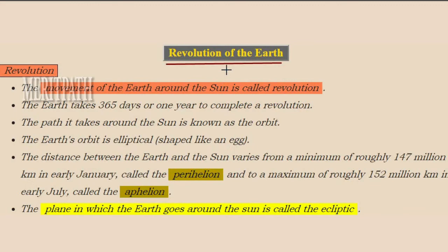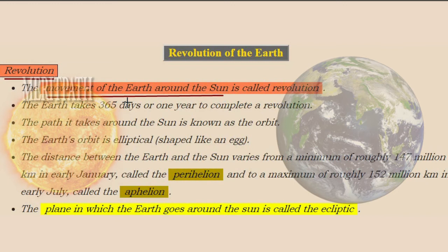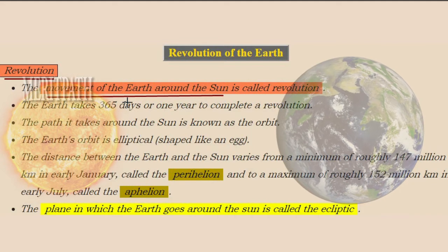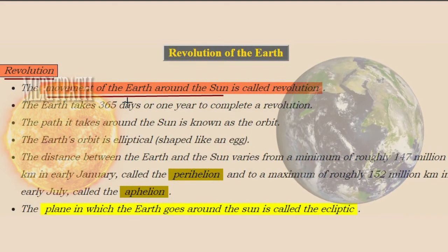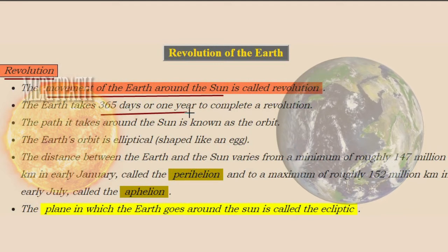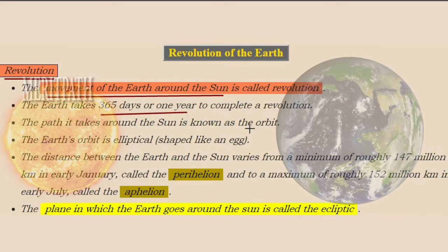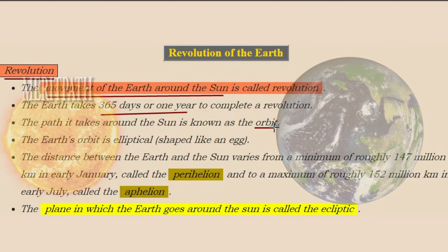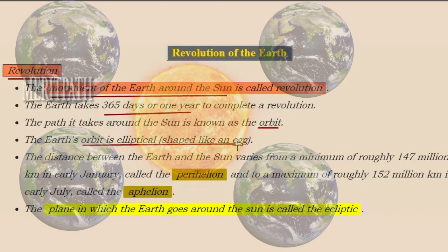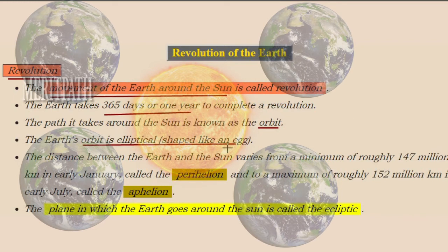Let's talk about the revolution of the earth. Revolution is the movement of the earth around the sun. Earth, while rotating on its own axis, also revolves around the sun. That movement of earth around the sun is known as revolution. It takes 365 days or one year to complete one revolution around the sun. The path in which earth revolves around the sun is known as the orbit, and the earth's orbit is always elliptical in shape.